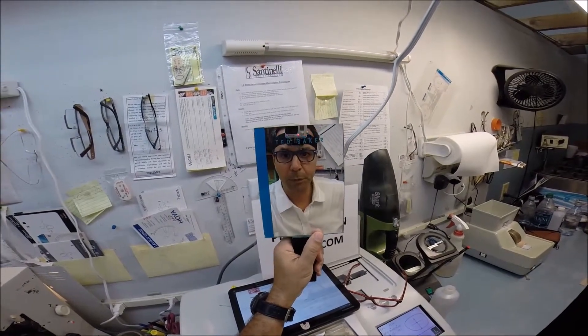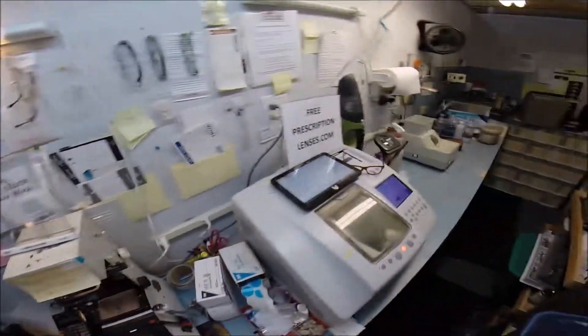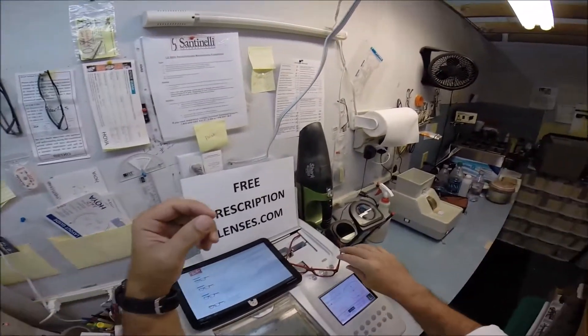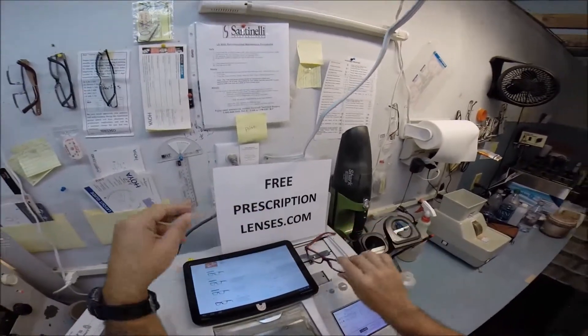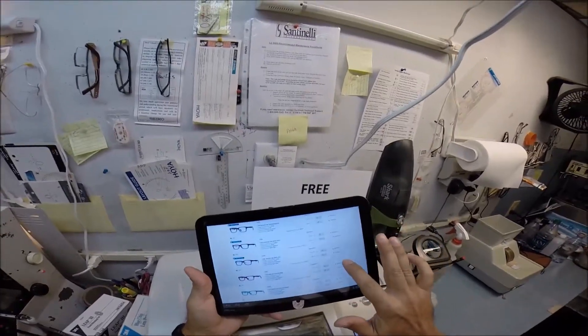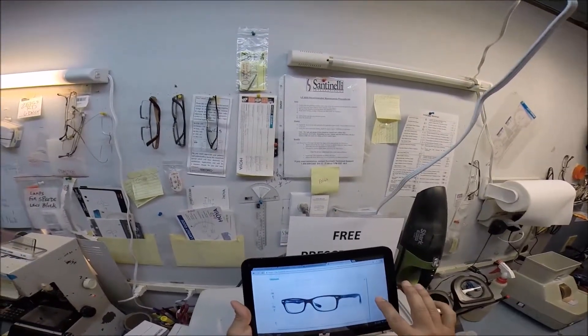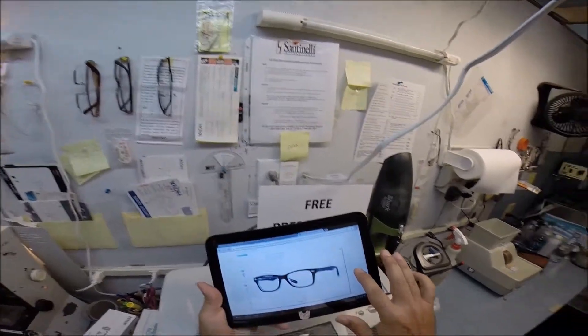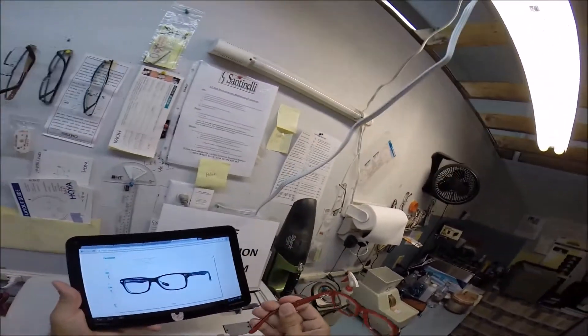Hey everyone, Matthew here with FreePrescriptionLenses.com. I have someone who emailed me requesting transition lenses and anti-glare coating for their Ray-Ban 1531. The frame retails for $100, and they want color code 3529, which is the black crystal.